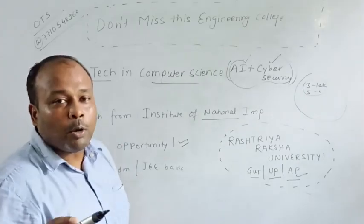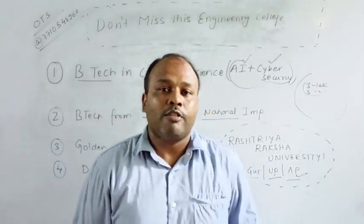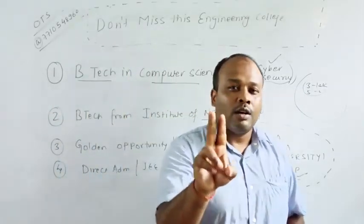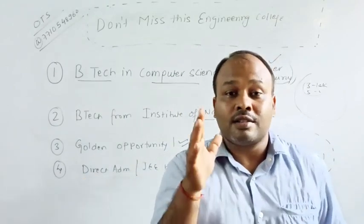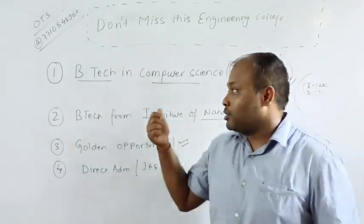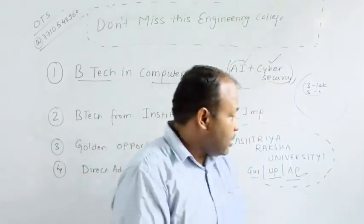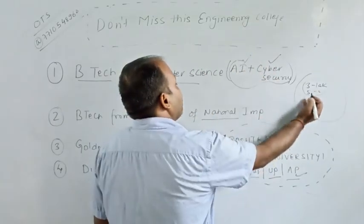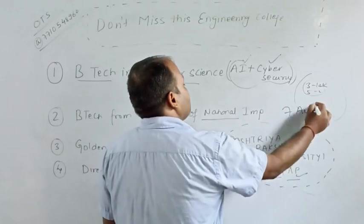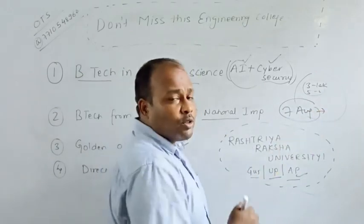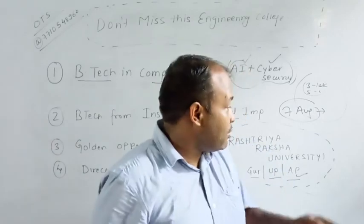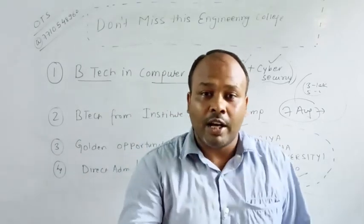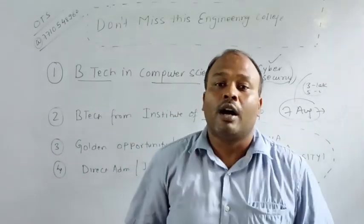If you are looking for computer science branch and you feel that your rank is not so good, so don't worry. This is the time. Please apply for this, Rashtriya Raksha University. The last day to apply is 7th of August. So it was actually 31st of July. Earlier it was 30 June. Now it was 31st of July. But since JEE Main's result has not come yet, they have extended till 7th August.